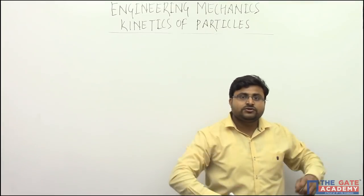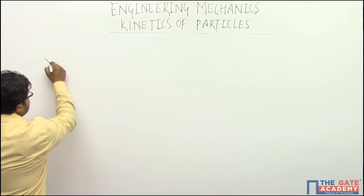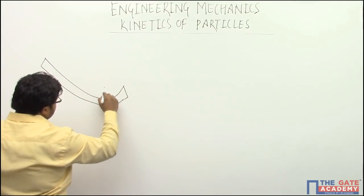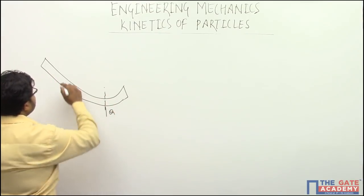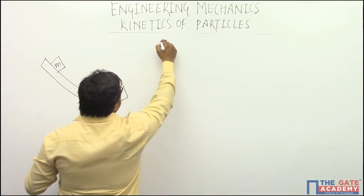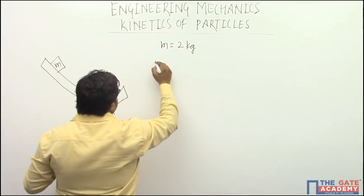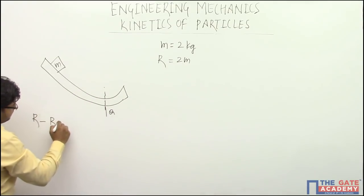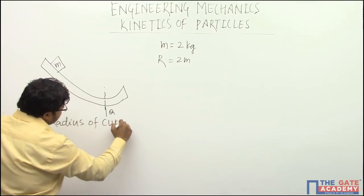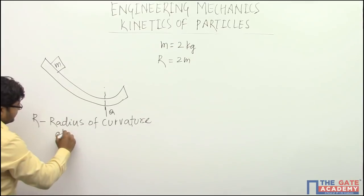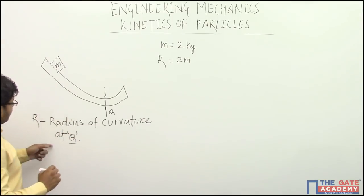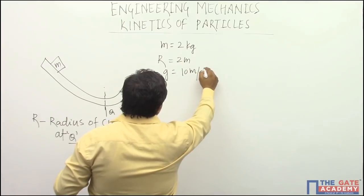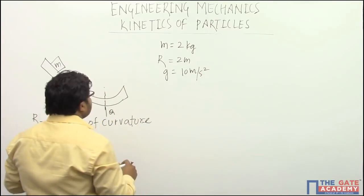So we have to find this normal force at Q. To start with, the diagram is given like this. This is the lowest point that they are labeling as Q. Suppose this is the mass. Now, they have given this mass equals 2 kg and R equals 2 meter. What is R? R is nothing but radius of curvature at Q. G value is also given as 10 meter per second square.